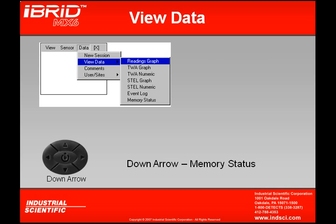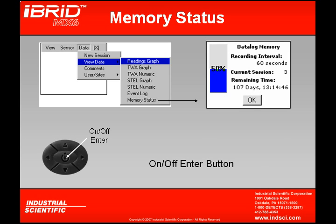If we press the down arrow from event log, our last option, memory status, will appear. Memory status will show me how much more time is remaining in my data logger. Under recording intervals, the instrument shows what my current recording interval is set to. As we see in this example, 60 seconds is my recording interval, meaning every 60 seconds information is being logged. It doesn't just take a snapshot — it takes all readings during that 60 seconds, gives an average, and then plots it in the memory. With 60-second intervals, I can log data for up to a year. I can set this anywhere from once a second to once every 300 seconds. How we change that recording interval is covered in Module 6.